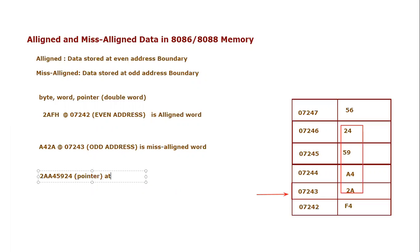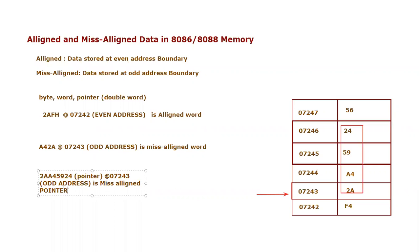This double word is stored starting at address 07243, which is an odd address. Therefore it becomes a misaligned pointer.